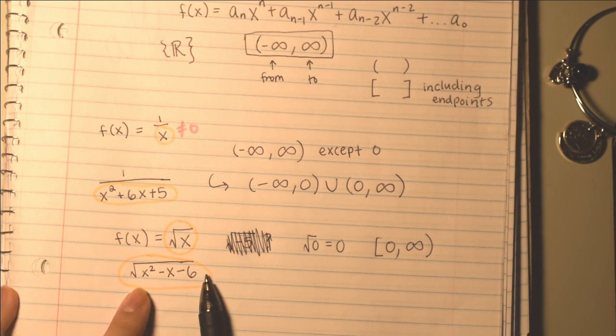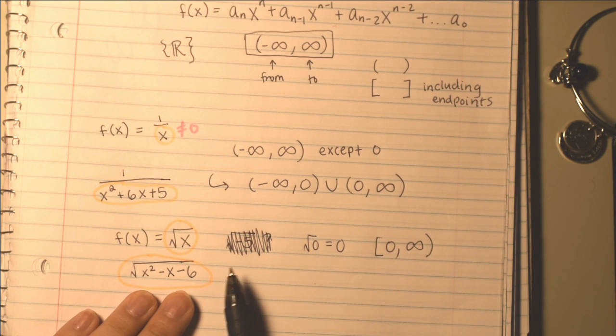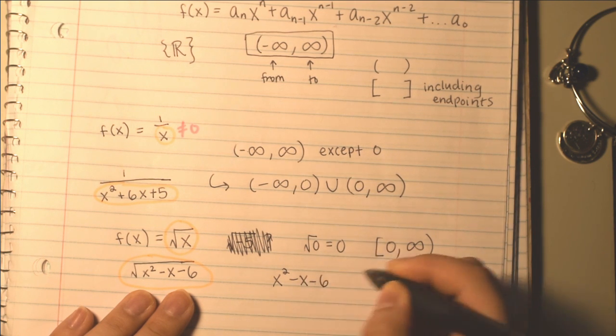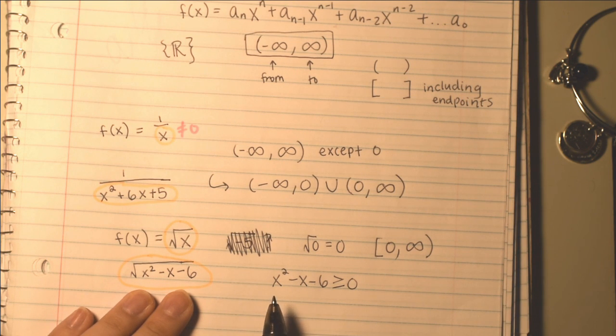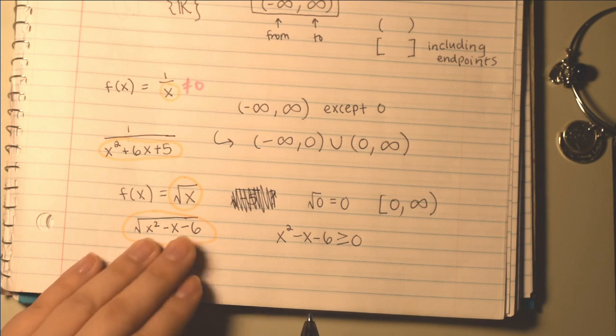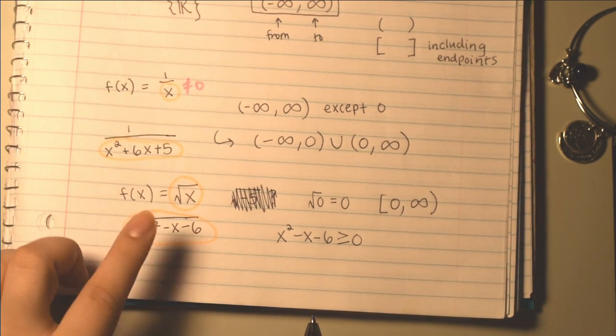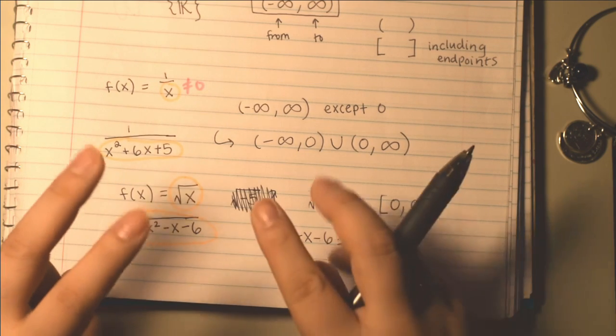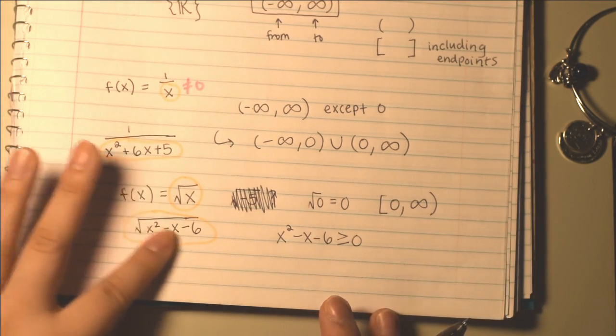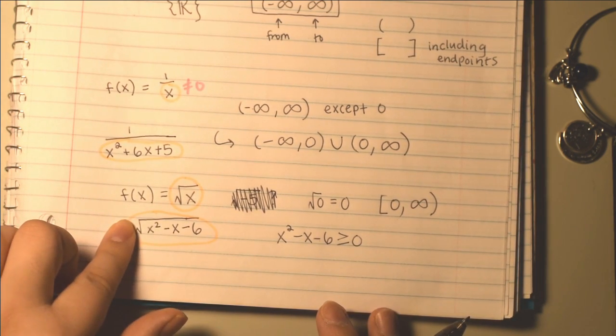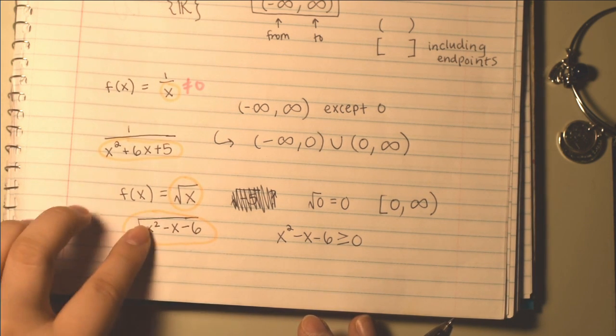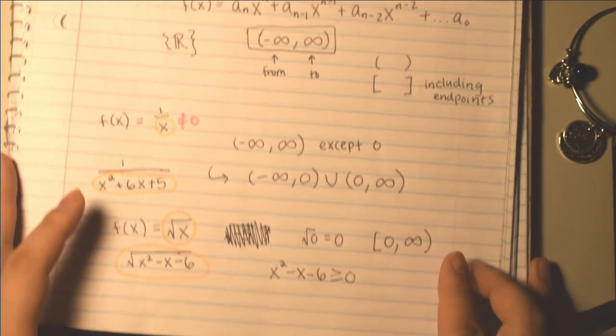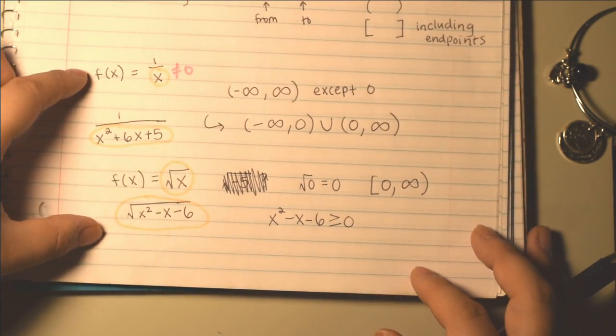So that's the domain of f of x equals square root of x. And then again, for this kind of situation, you can extrapolate from what we did here. But you just need to now solve this inequality for x squared minus x minus 6 being greater or equal to 0. And you have to find what x values satisfy this. Because if you input some sort of x in this, where x squared minus x minus 6 evaluates to something that is less than 0, you have broken the math. It's outside of what's allowed under the square root. So if you're trying to find the domain of this, you have to consider when that whole thing is going to be greater or equal to 0.